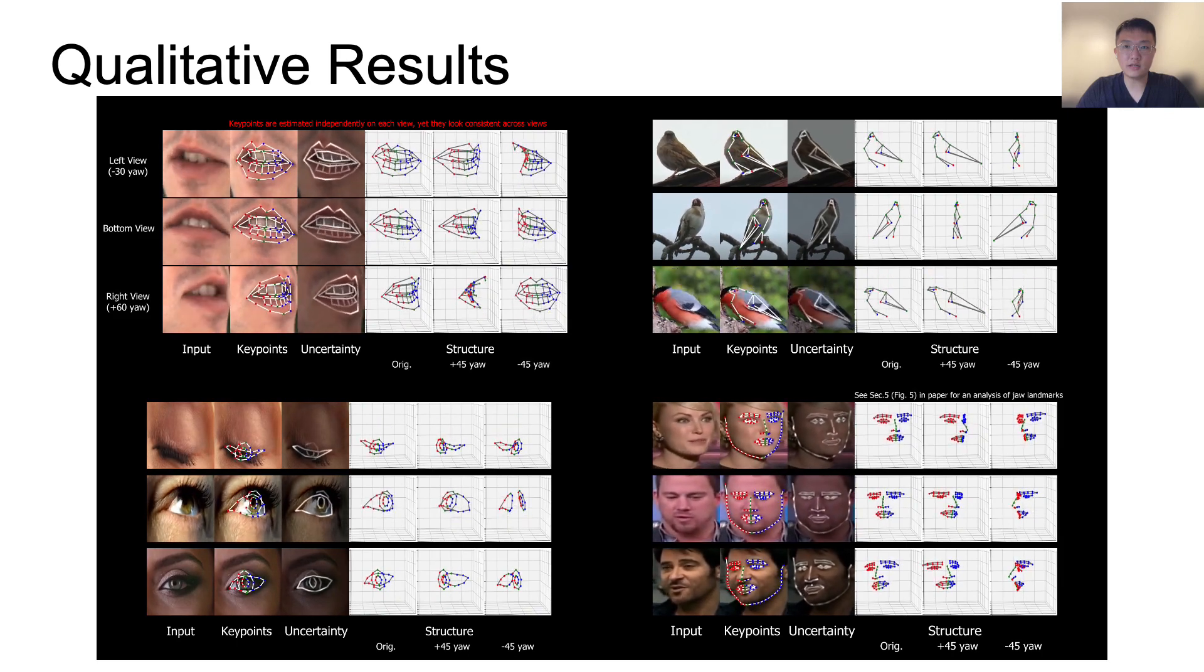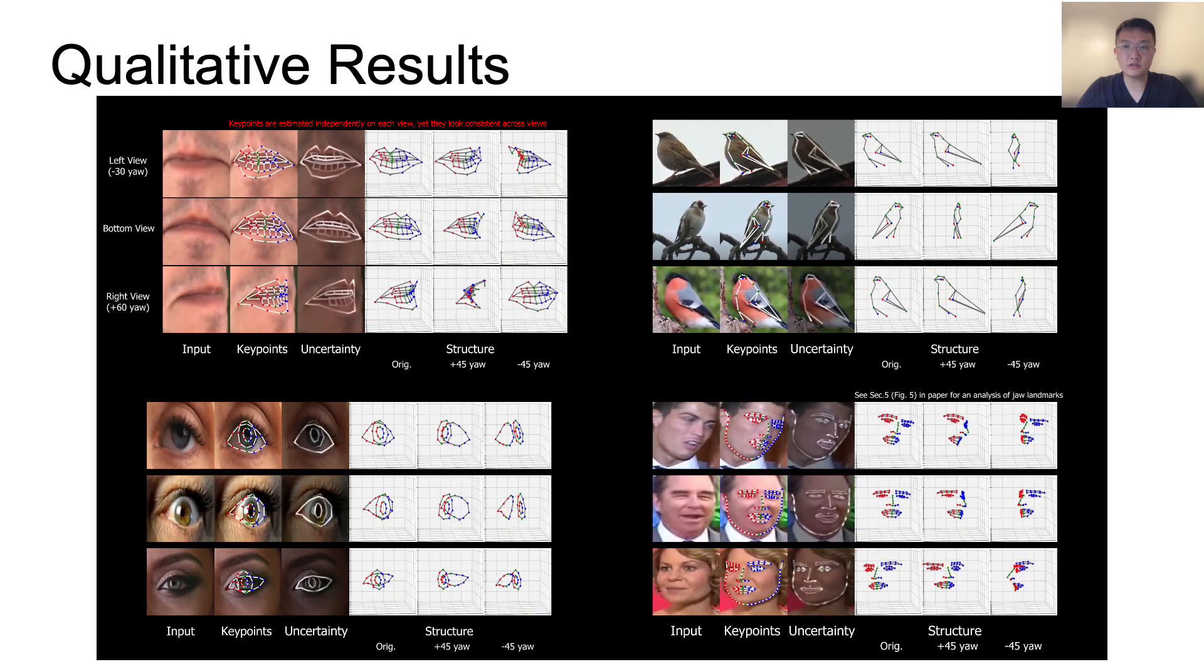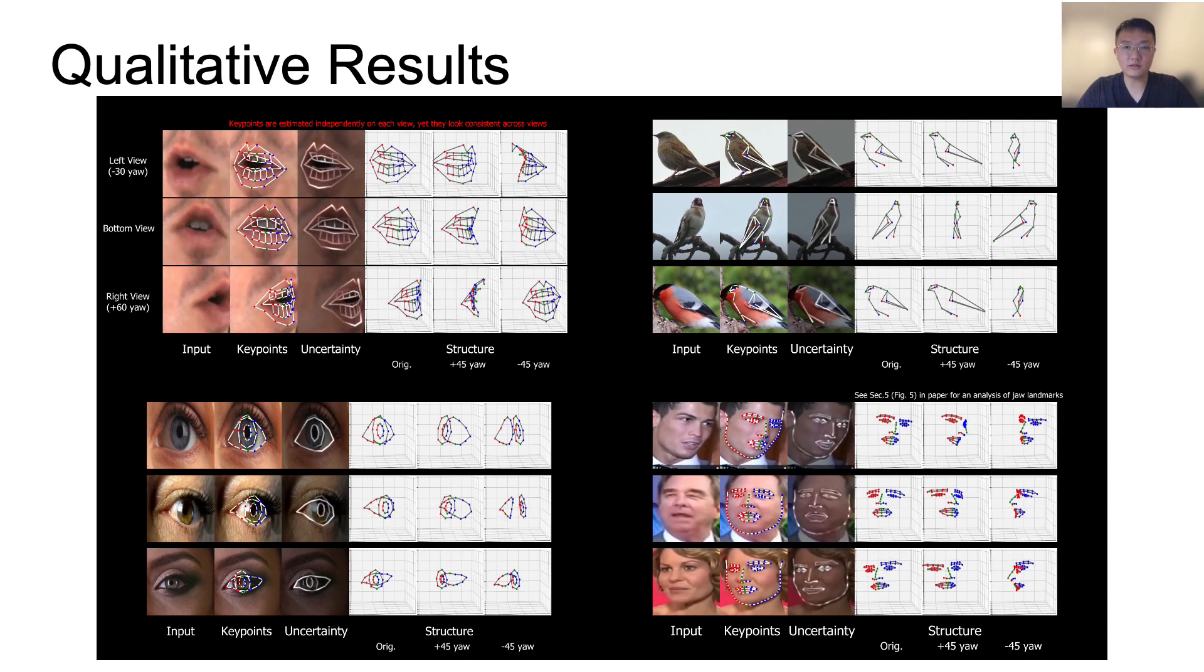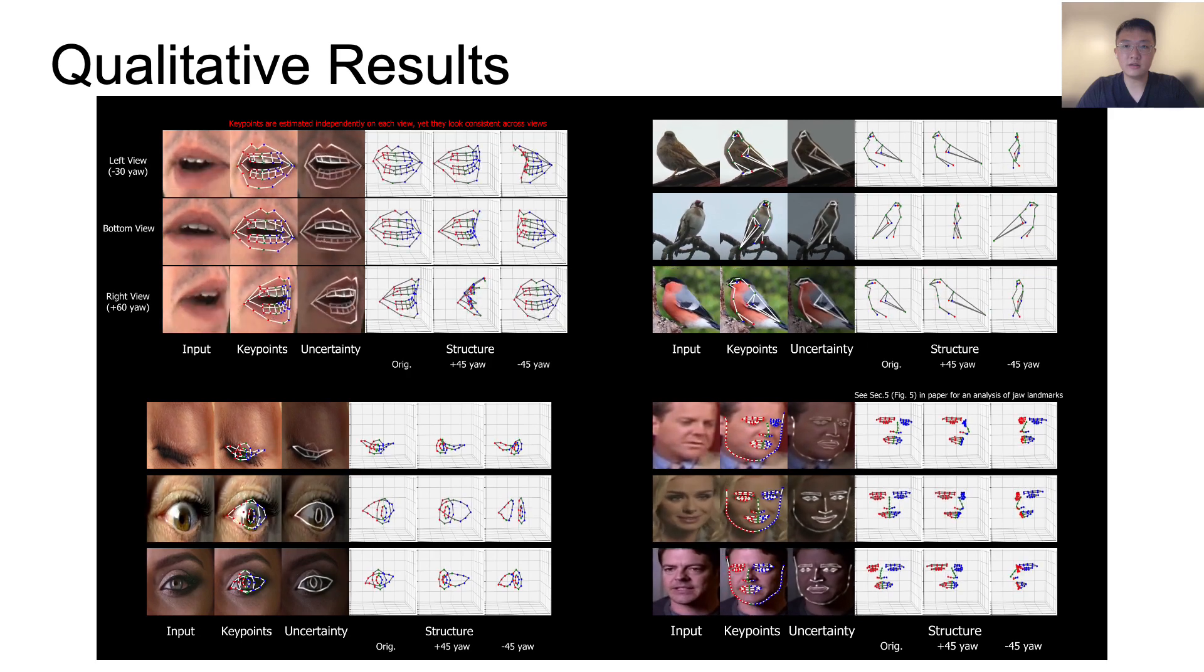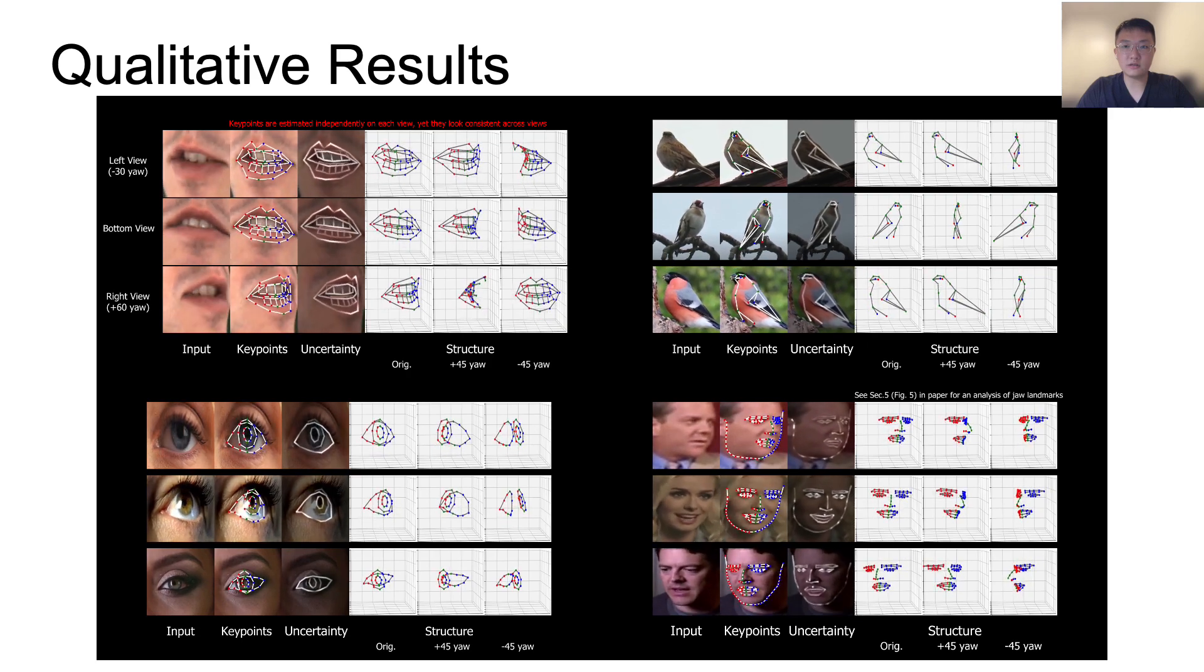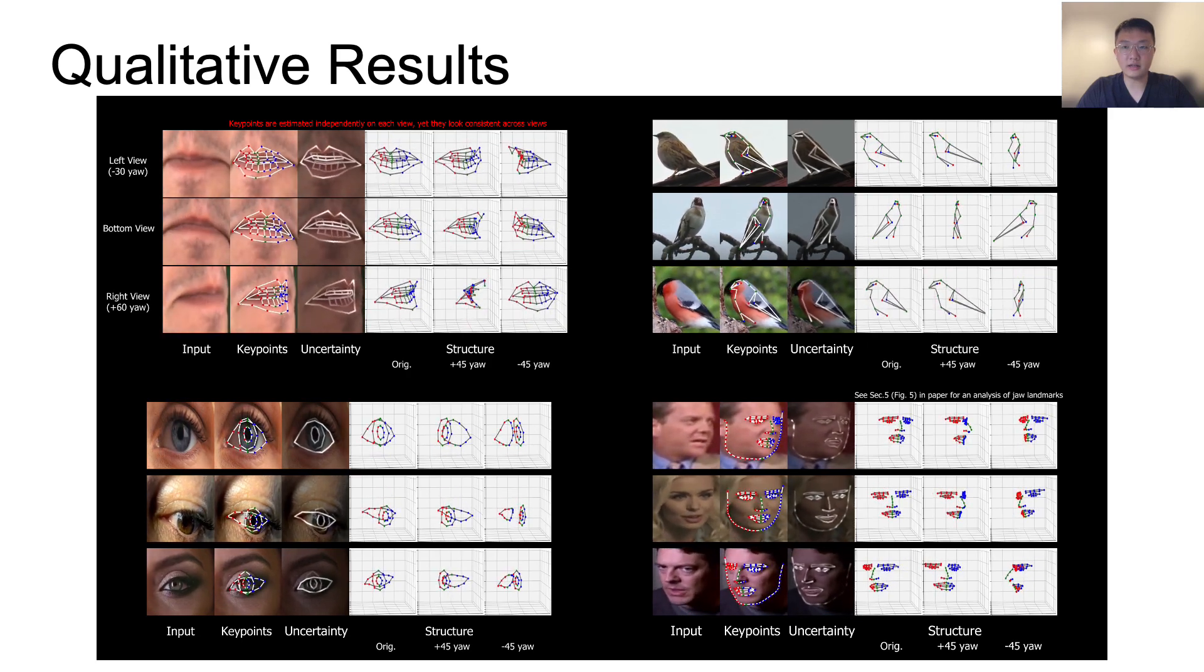Here are our qualitative results. We show the input image, keypoints, uncertainty, and the 3D keypoints from different angles. Note that all models are trained with only 10 annotated examples.